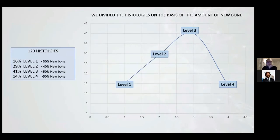We made 129 histologies and divided them into four different levels. Why? Because we would like to understand that every surgery is completely different. The result depends on the hand of the dentist, the surgeon, and the typology of the surgery.